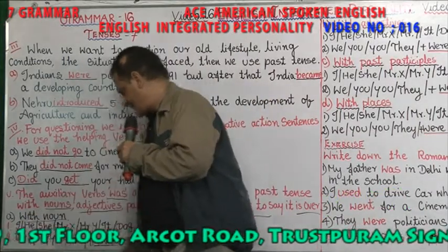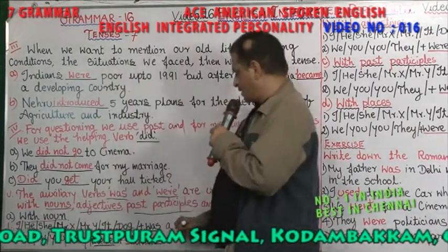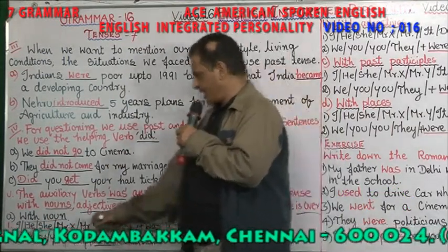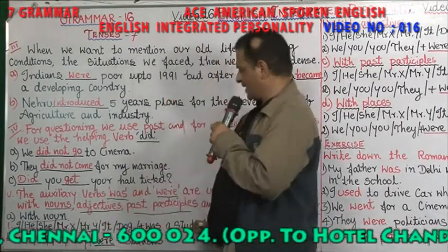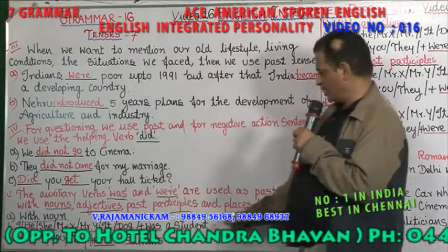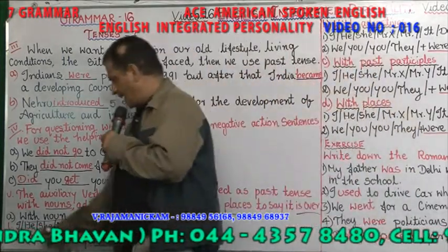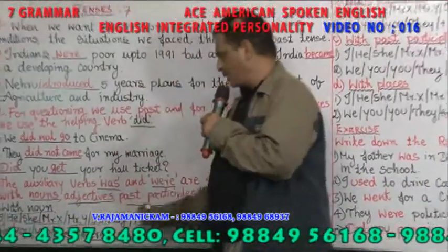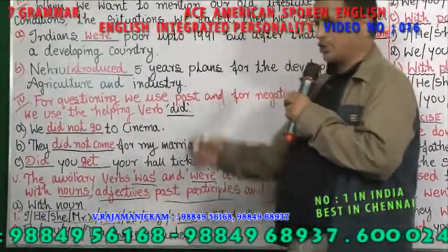Was and were as past tense with nouns. For singular: I was a student, he was a student, she was a student, Mr. Ram was a student, Mrs. Lalita was a student, it was a student — to say it is over. For plural: we were students, you were students, they were students — it is over.